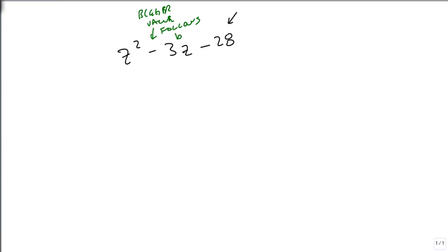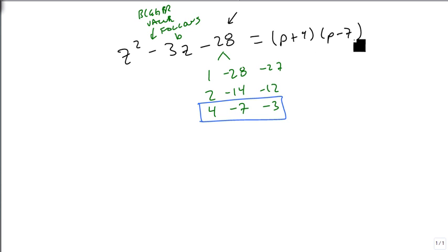28 breaks down as 1 and 28, and the 28 is going to be negative, 2 and 14, and 4 and minus 7. That adds to minus 27, minus 12, and minus 3. There we go, there's our answer. We're going to write this as P plus 4, P minus 7.